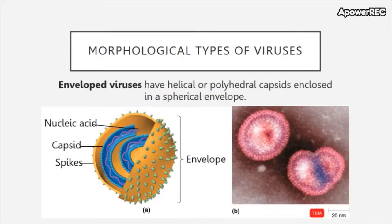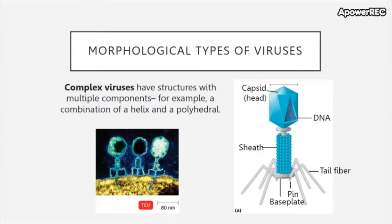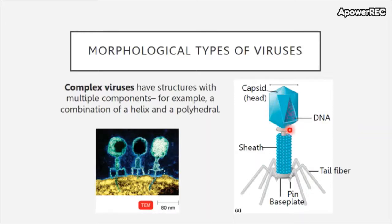Enveloped viruses have helical or polyhedral capsids enclosed in a spherical envelope; examples include flu viruses and herpes viruses. Complex viruses have structures with multiple components, such as a combination of a helix and a polyhedral. A good example is a bacteriophage, which has a capsid head containing DNA, a sheath connecting to a base plate and tail fibers, and spikes for attachment. When it finds the correct host, it injects DNA through the sheath like a hypodermic needle.